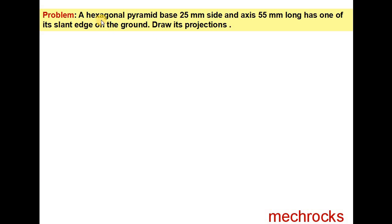They give a Hexagonal Pyramid, base 25 mm length, axis 55 mm. One of its slant edges is on the ground. A Hexagonal Pyramid contains 6 slant edges, and one should be on the HP. Ground means horizontal plane. Draw its projections.